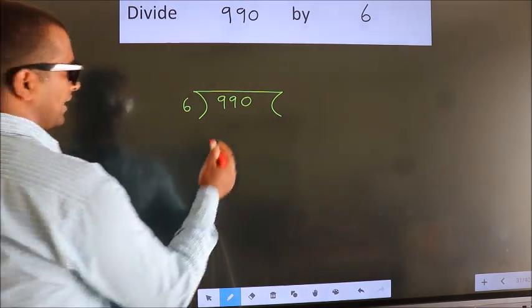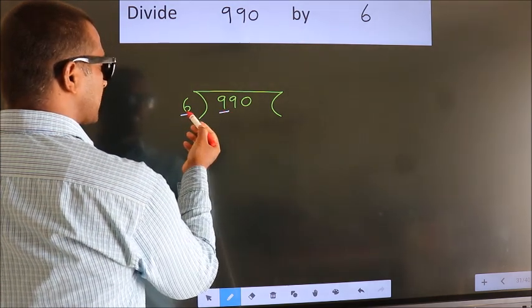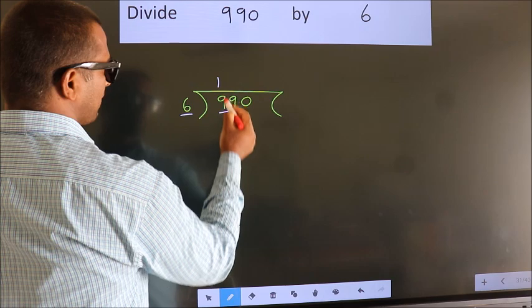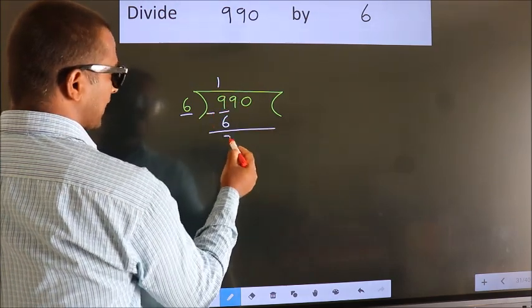Next, here we have 9, here 6. A number close to 9 in 6 table is 6 once 6. Now we should subtract. We get 3.